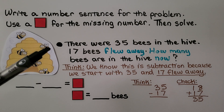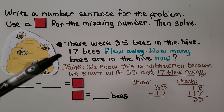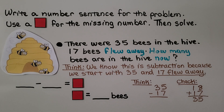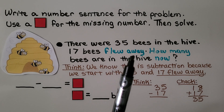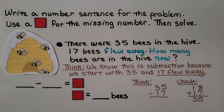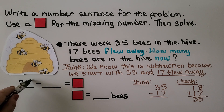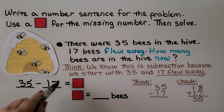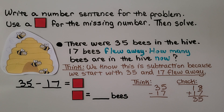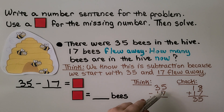There were 35 bees in the hive. 17 bees flew away. How many bees are in the hive now? Do you see the subtraction clue words? 'Flew away' and 'how many now.' We know this is subtraction because we start with 35 and 17 flew away. We have 35, 17 flew away, and we need to find the difference. We try to do 5 take away 7 — we can't, 5 isn't big enough.